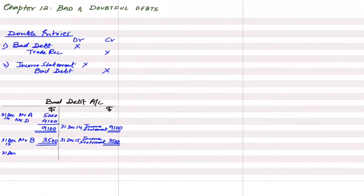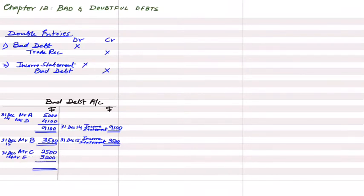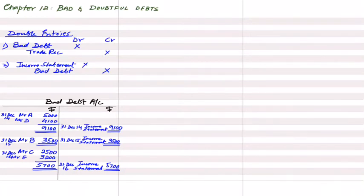In 2016 there are two bad debts: Mr. C for 2,500 and Mr. E for 3,200. The entry is bad debt debit and Mr. C and E accounts respectively credited. The total bad debts for the year-end are transferred to the income statement account. There are no balance BD or balance CD in a bad debt account.